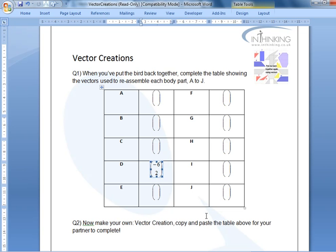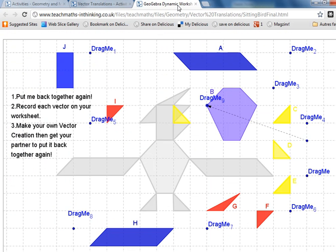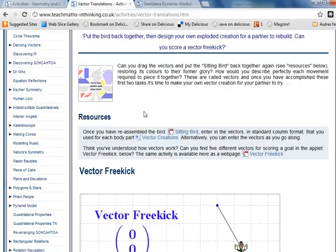Your partner can then check, and then you're going to make your own creation. You could make a bird like this one, or you could make a plane, or a house. See the help videos in Autograph and GeoGebra for how to make your creation and how to translate the shapes ready for your partner to have a go at it. That'll take most of the lesson.